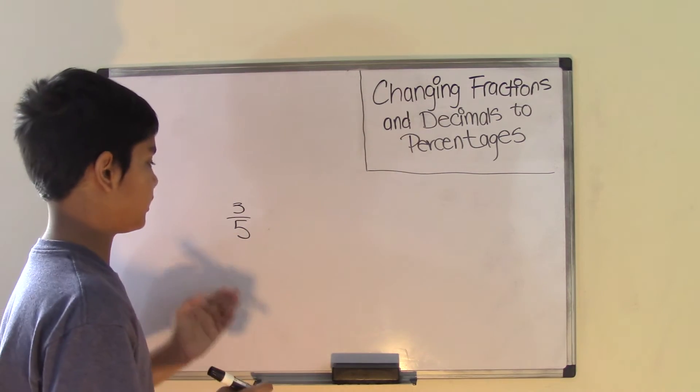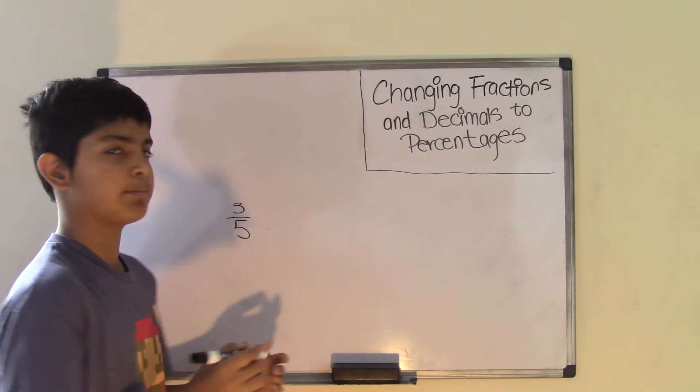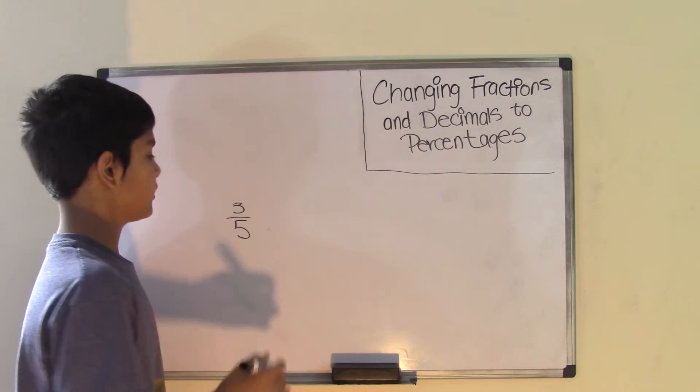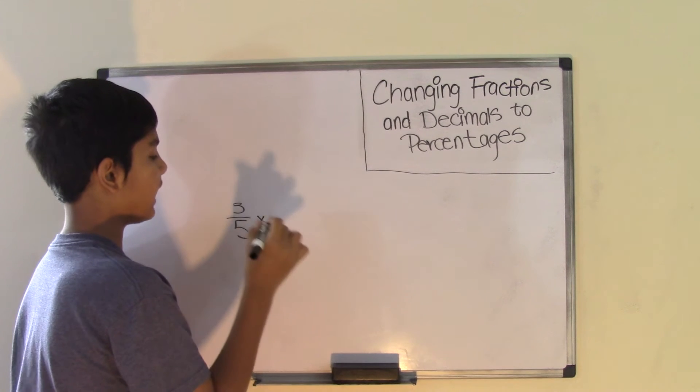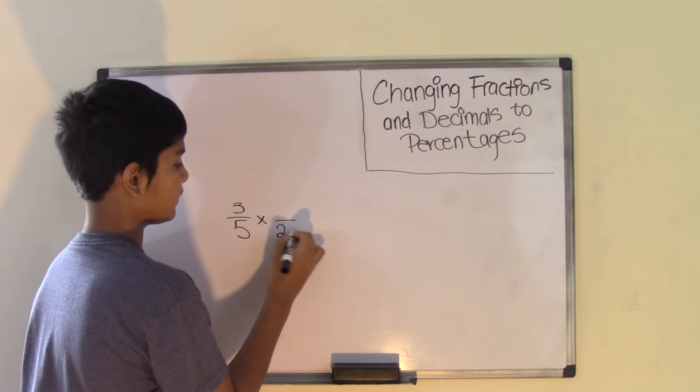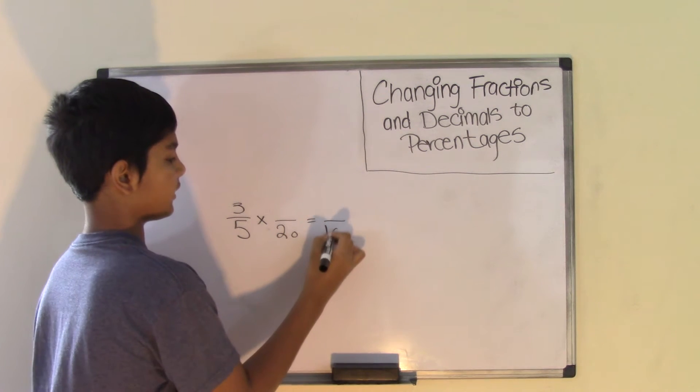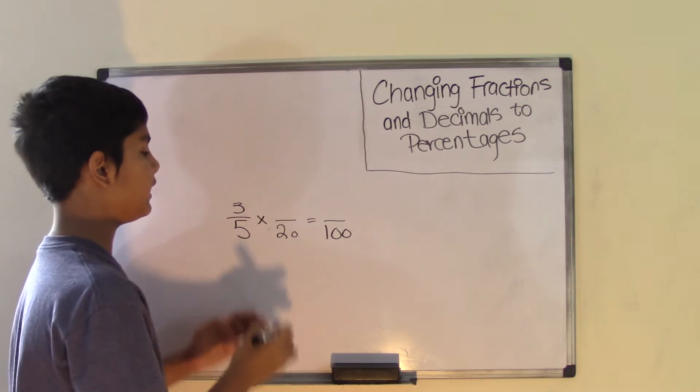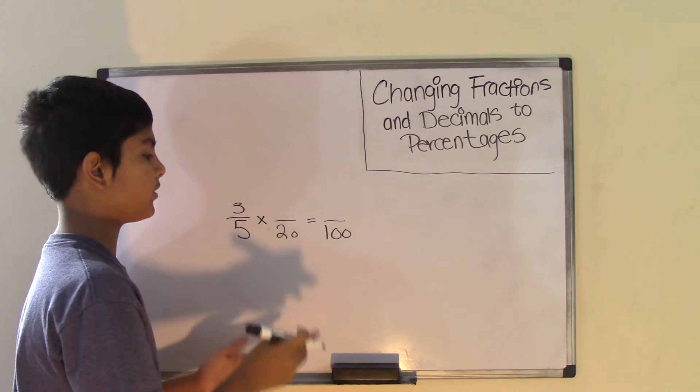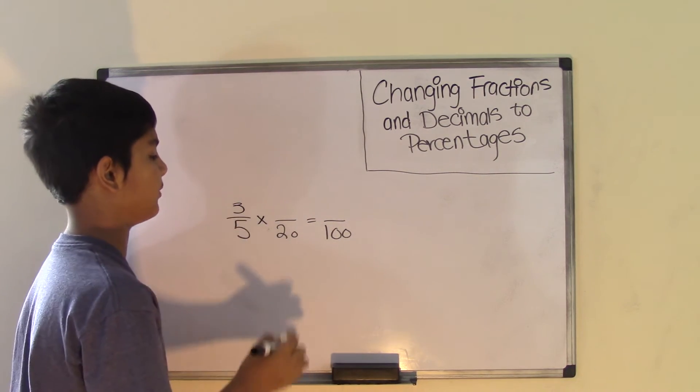So first we need to change the denominator into 100 by multiplying it by another number. So if you multiply 5 by 20 to get 100, then you're going to multiply 3 by 20 as well. So whatever you do to the denominator, you do to the numerator.